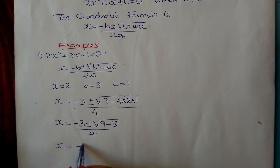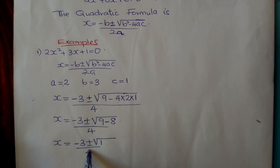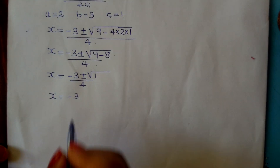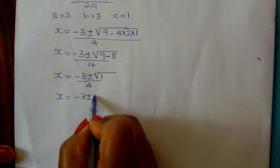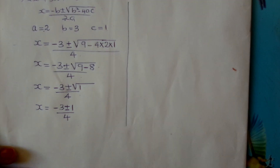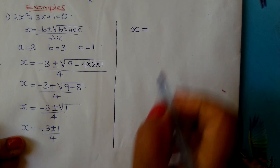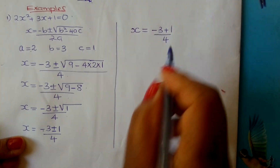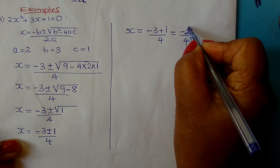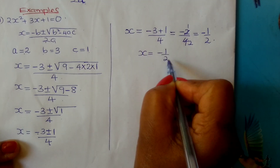So x equals minus 3 plus or minus the square root of 9 minus 8, which is 1, all divided by 4. The square root of 1 is 1. So x equals minus 3 plus 1, divided by 4. That gives minus 2 divided by 4, which simplifies to negative one half. So your first value of x is negative one half.